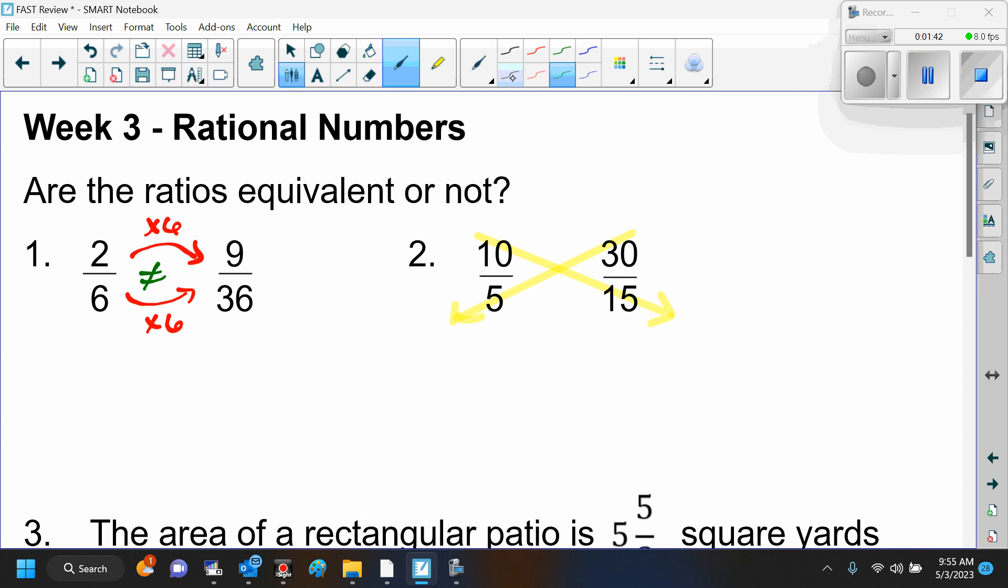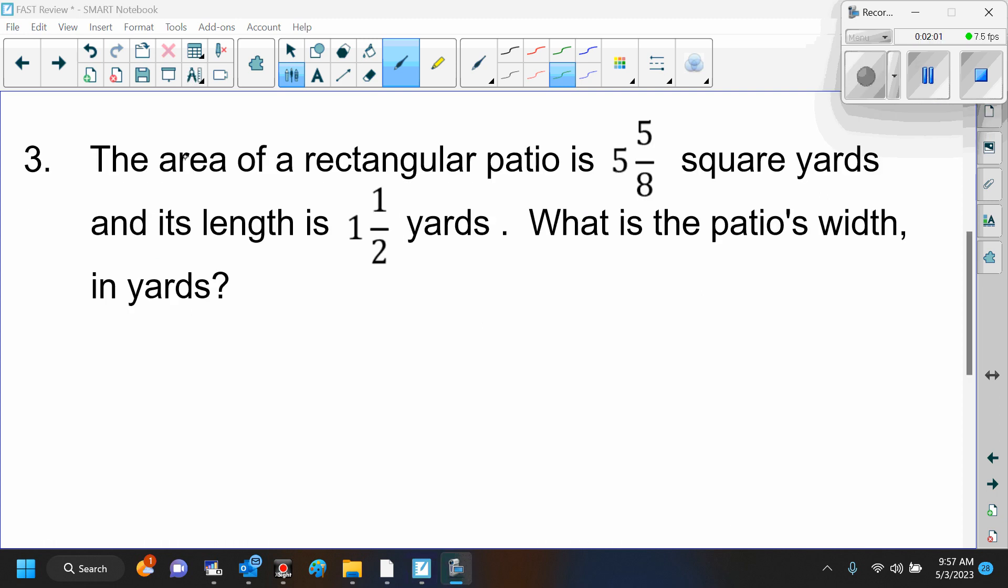Let's see what we get here. So when we cross multiply, 5 times 30 is 150, and 10 times 15 is 150. Are those equal? Yeah. So that means these ratios are equivalent.